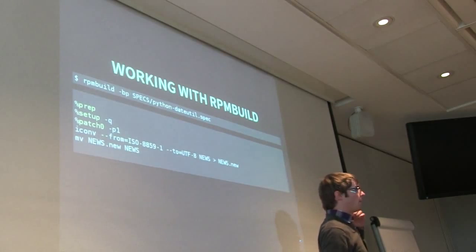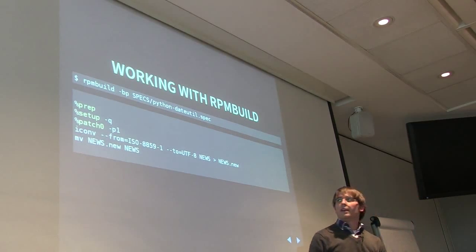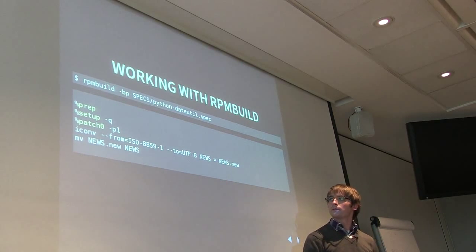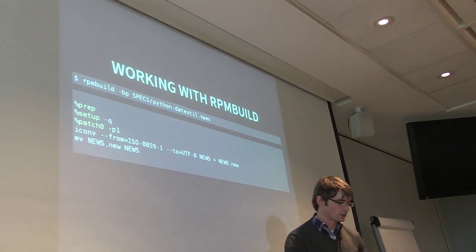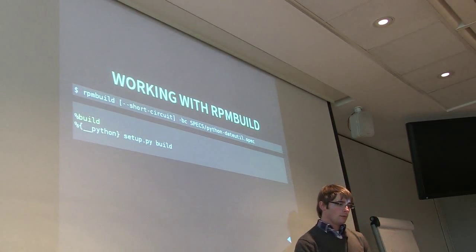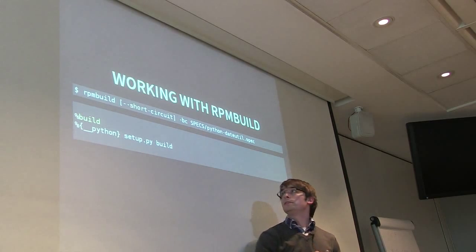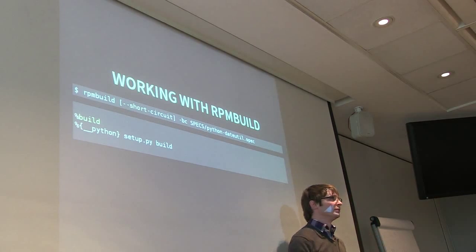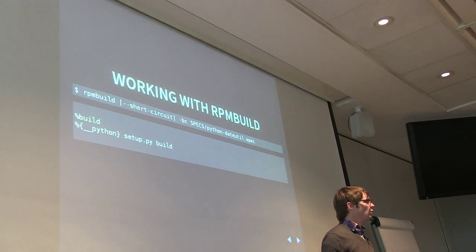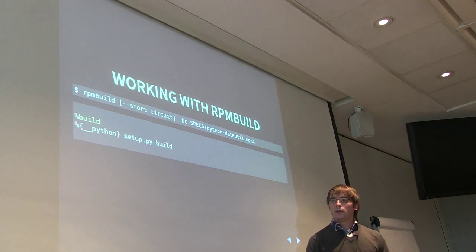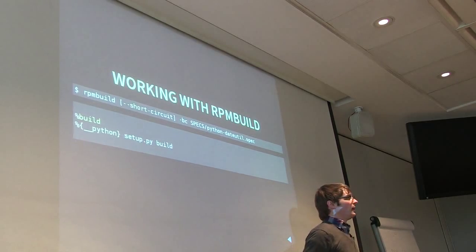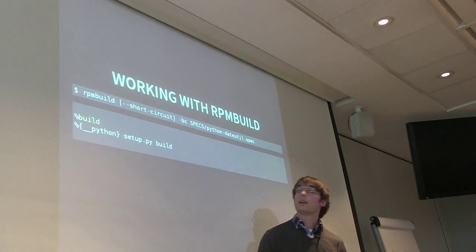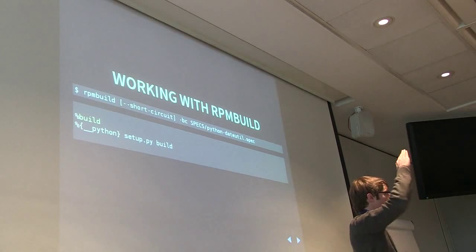We declared a patch zero - if you had a bunch of them you do patch one, patch two, all that stuff. The next step would be to run the build step - that's RPM build dash-BC. One nice feature: if you're working on a spec file that has a really long prep step or a really long build step, you can actually short-circuit some of these. So if you're tweaking your spec, you can just start at the build section since you've already unpacked all that stuff and don't need to do it again. If you leave off the short-circuit, it's going to run through the whole process from the beginning. And then finally, we're going to run the install.